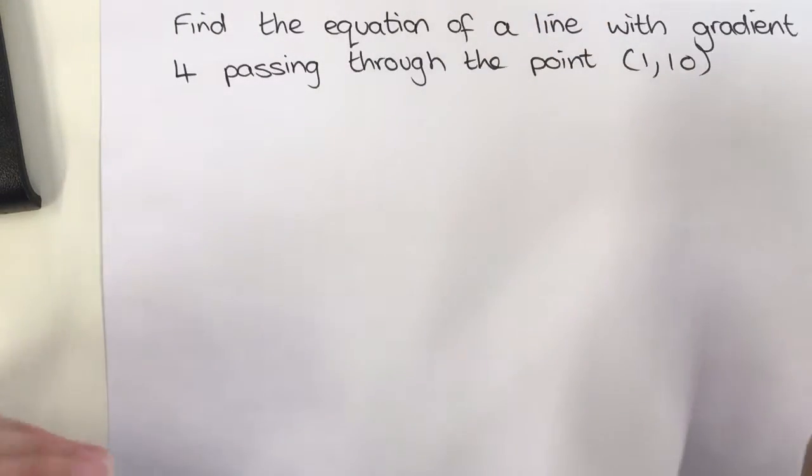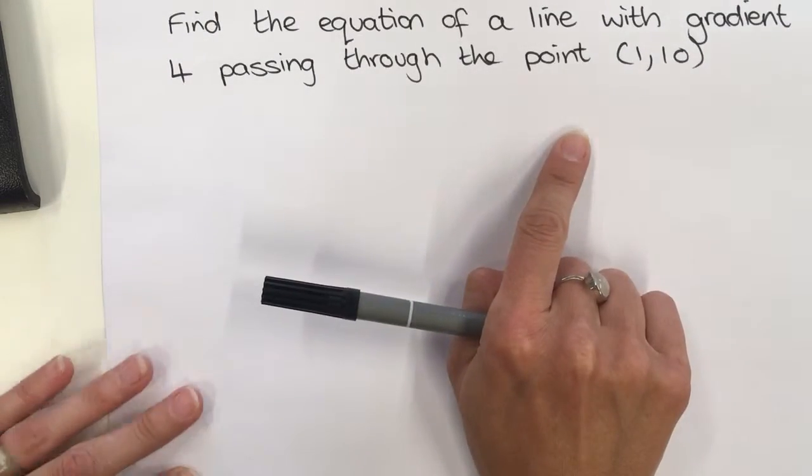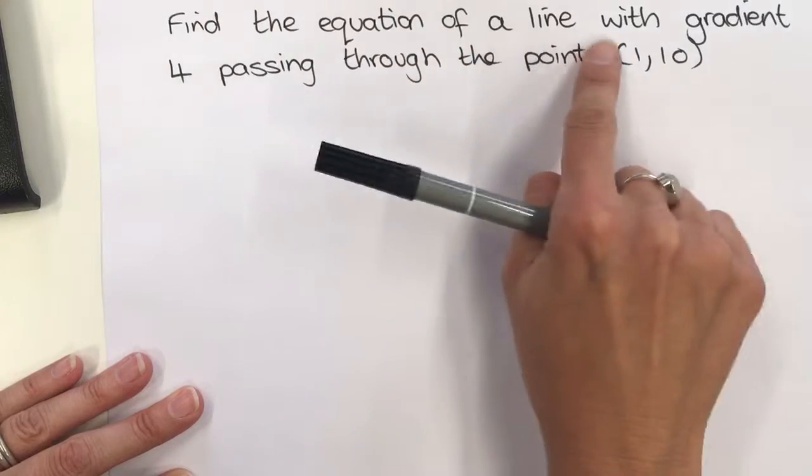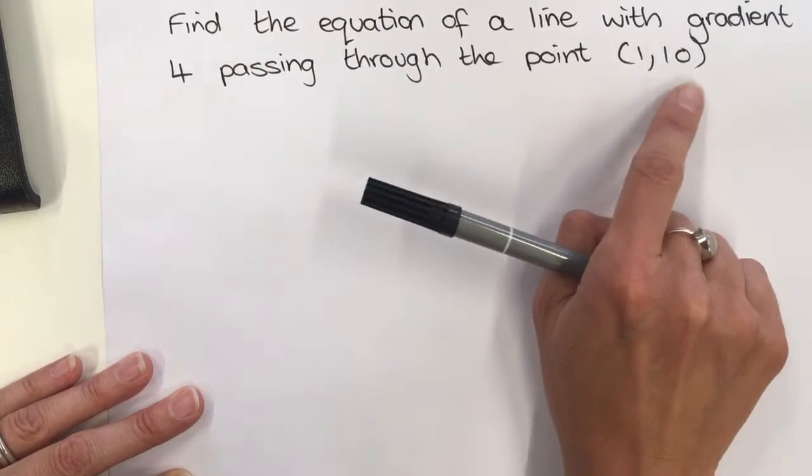This tutorial is going to look at how to find the equation of a line when you are given a gradient and a point. The question says: find the equation of a line with gradient 4 passing through the point (1, 10).